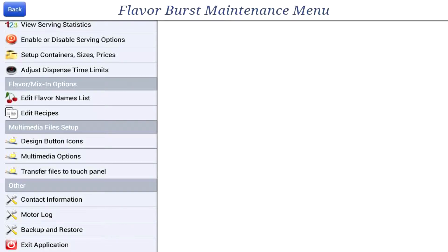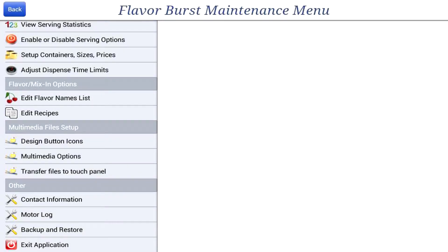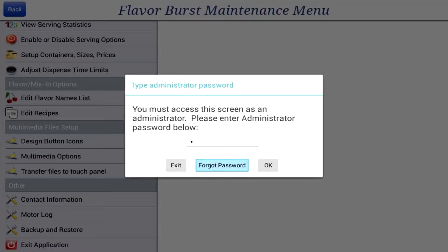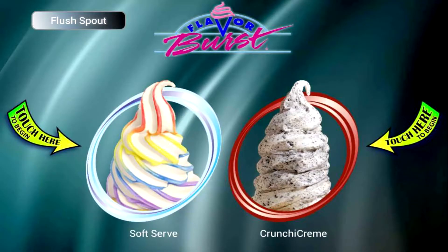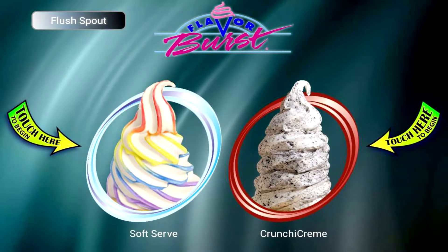It's important to understand what the different file types are and how they function on your touch panel. Under multimedia files setup in the left side panel, press Transfer Files to Touch Panel. On this page you will see different types of files listed. The first type of file is the logo image file. The logo image files show up in a couple different places, as you can see by the red arrows.